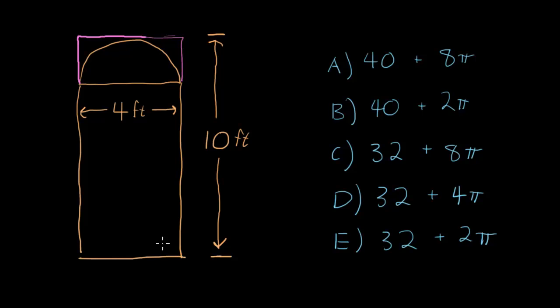So does the area of our window need to be bigger or smaller than 40? Smaller, right? Because we're cutting off the corners here. So we need something less than 40. Let's see what that means for the answer choices. Well it's not A or B. They're each 40 plus something.